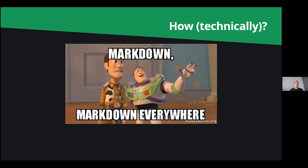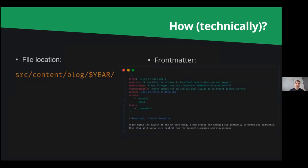How should the PR look? Our website is Markdown — Markdown everywhere, actually Markdown and MDX. You write a Markdown file. It should be in the /blog, then /year directory inside the contents directory.